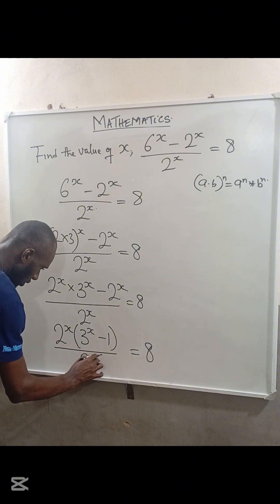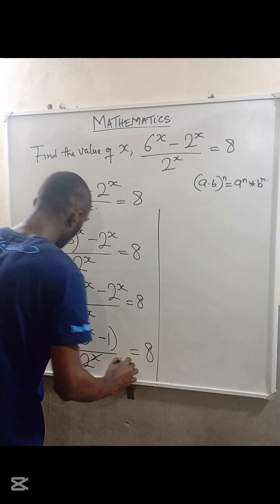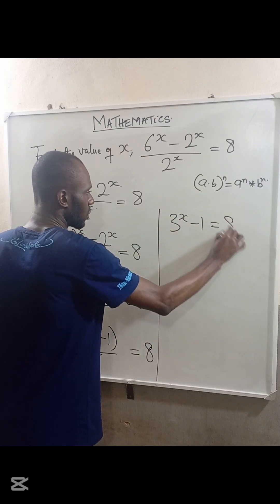So the 2^x terms cancel, and we now have 3^x - 1 = 8.